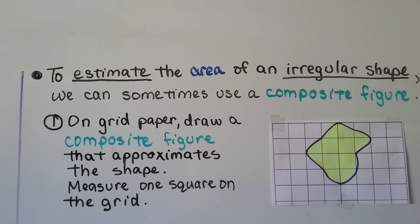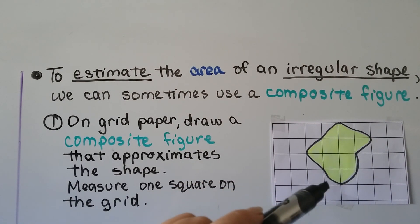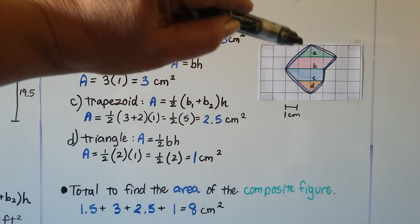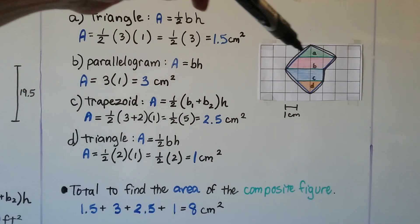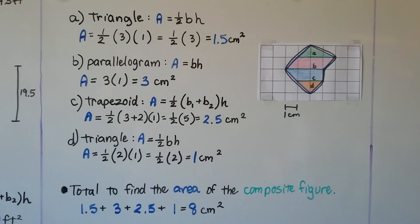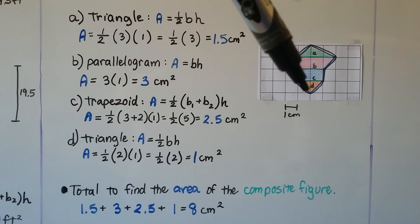To estimate the area of an irregular shape, we can sometimes use a composite figure. When we look at this shape, we can see there are some curves. On grid paper, we draw a composite figure that approximates the shape, and we measure one square on the grid. Instead of the curves, I drew straight lines because we're only doing an estimate. That split some squares into diagonals. We have triangle A, parallelogram B, trapezoid C, and another triangle D.